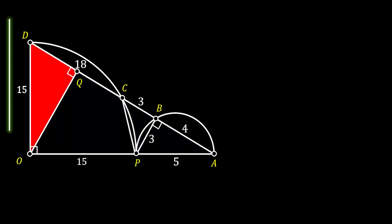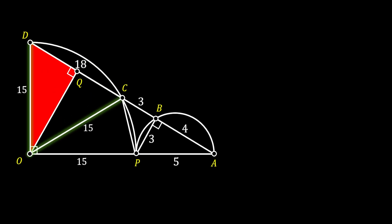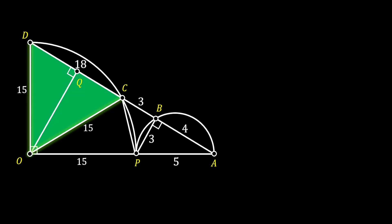Now let's head back to our original sketch and set our attention to radius OD. If we rotate this radius to point C, we can notice that line OC must also have the value of 15. That means triangle OCD is an isosceles triangle with base of 18 and height OQ, which we label as H. Since the height of an isosceles triangle divides its base into two identical segments, segment DQ must have the value of 9.